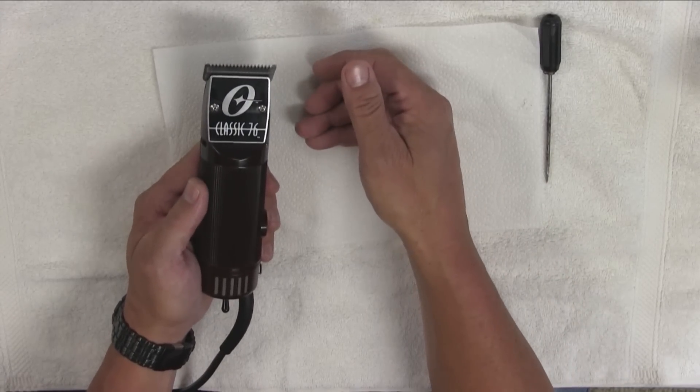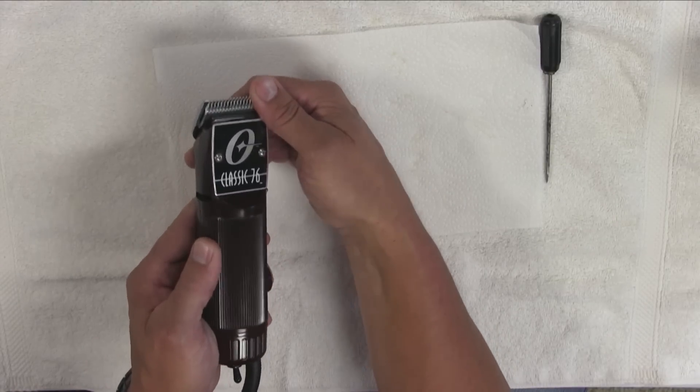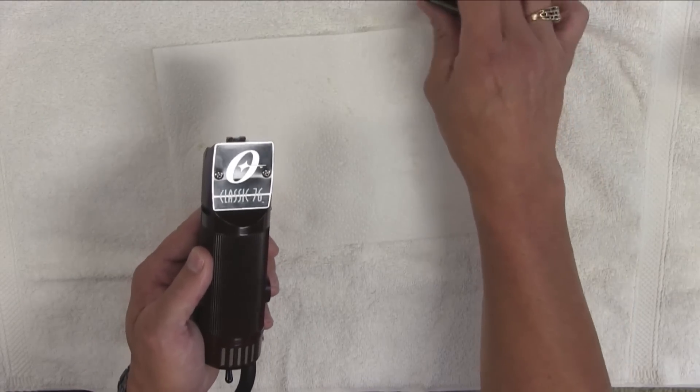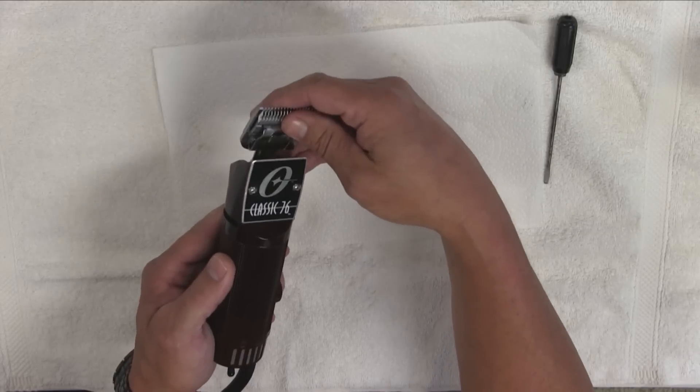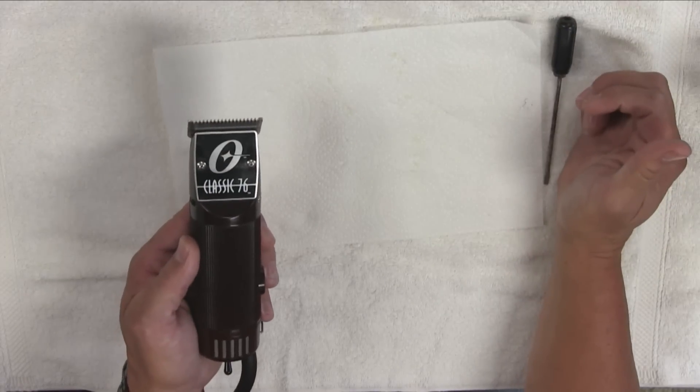In the middle of a haircut, you want to change blades. Put your finger right over it while it's running, take it off, set it down, grab your other blade, put it on, snap it in place just like that.